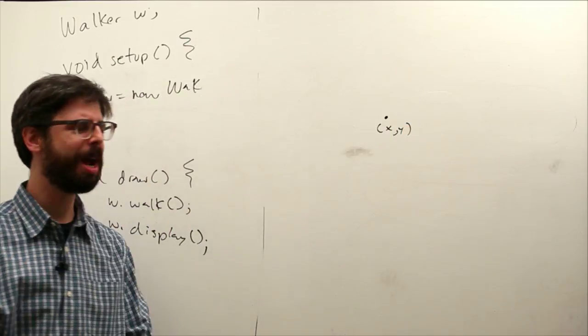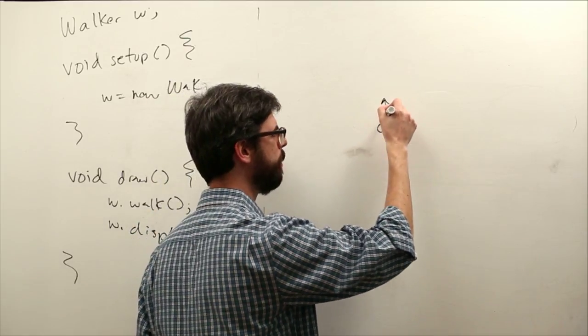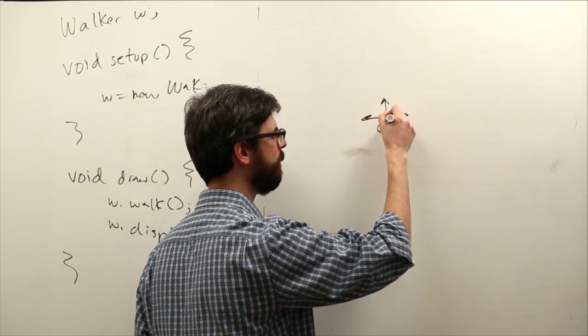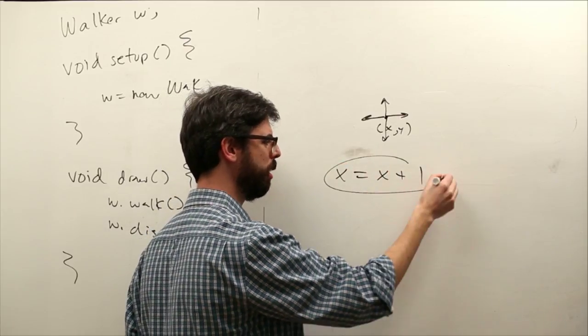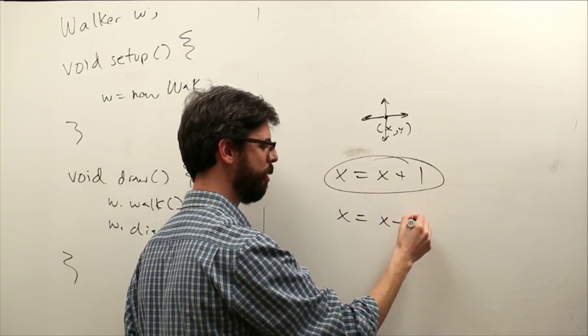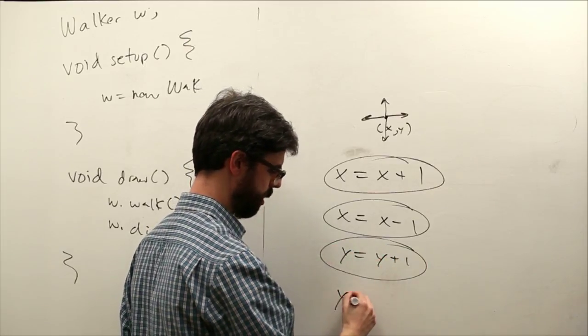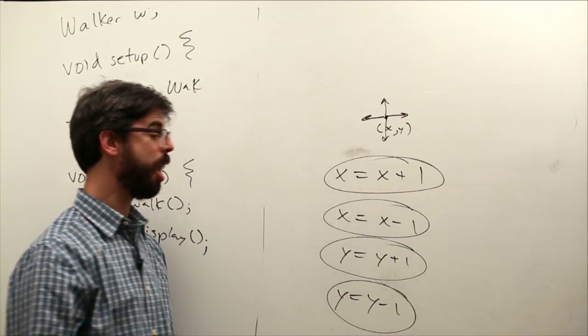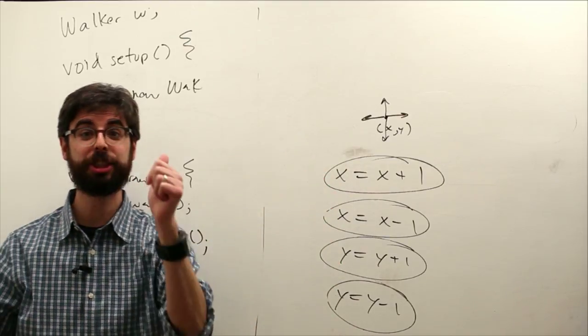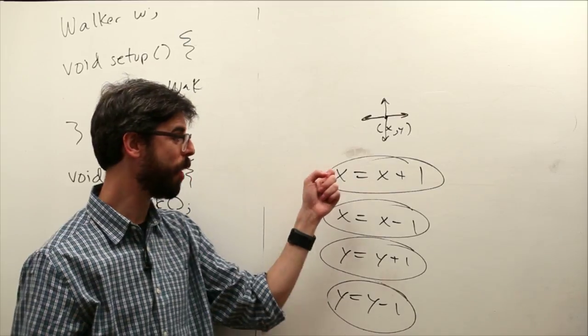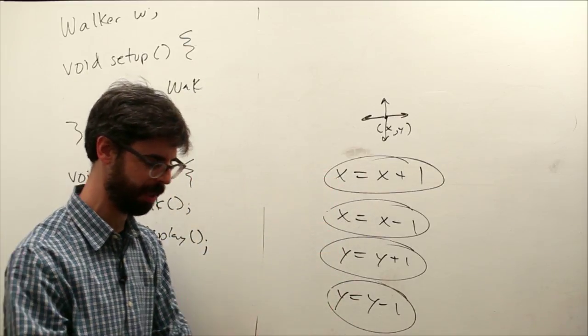The traditional random walker, sort of basic first example, you could say there are only four options. Move up, move to the right, move to the left, or move down. Meaning either x changes by one, or negative one, or y changes by one, or negative one. Four options, each with an equal probability. 25%, 25%, 25%, 25%.